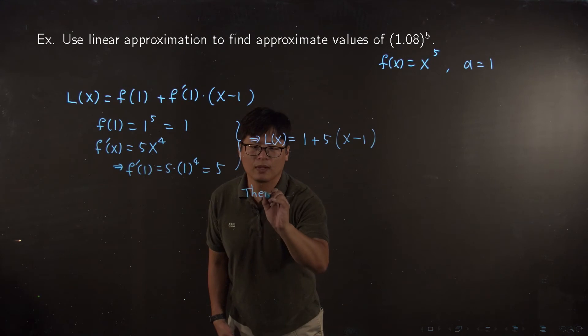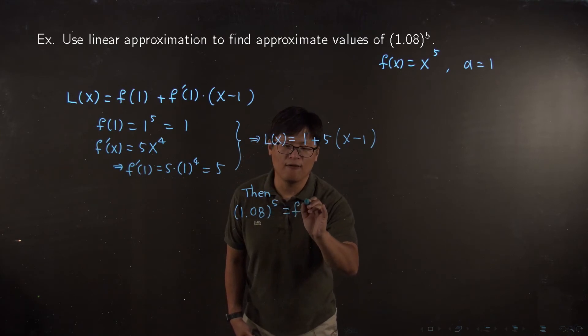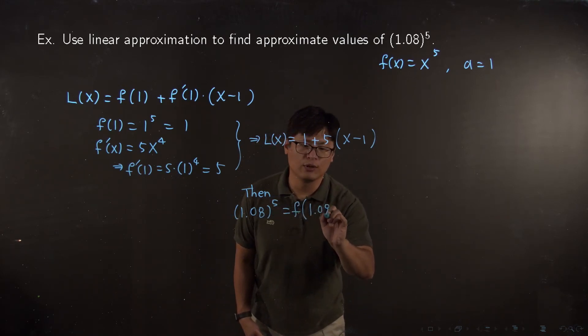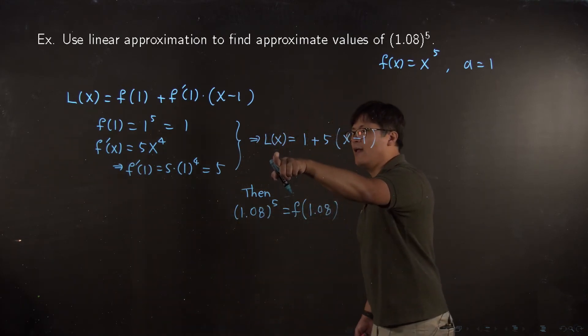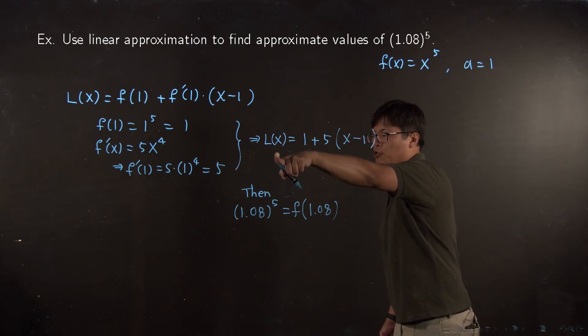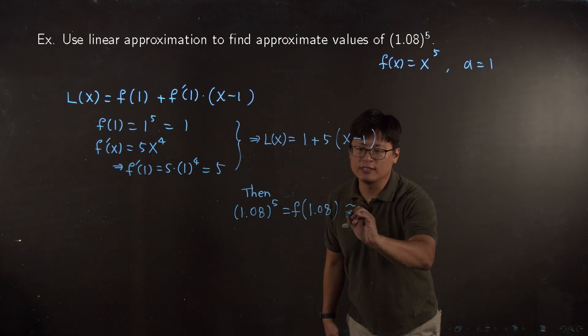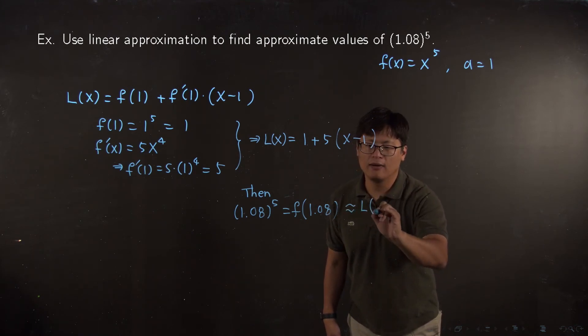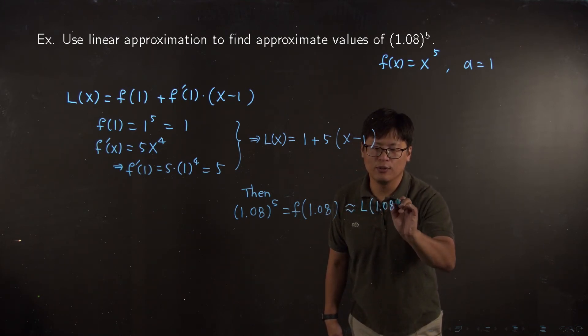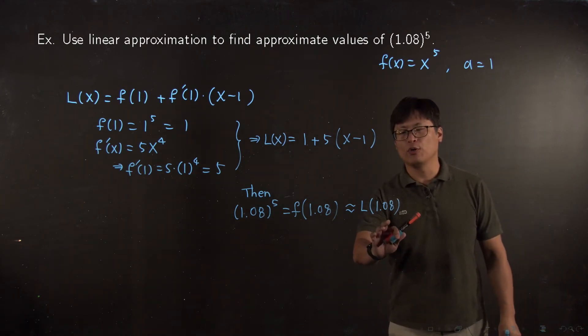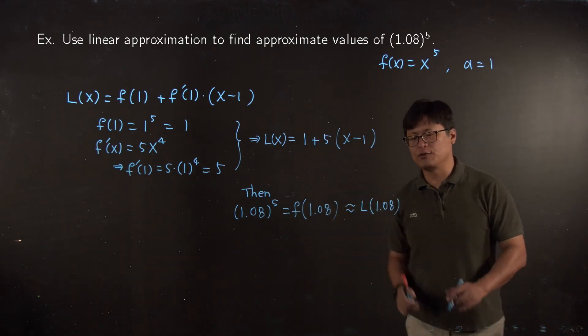Now let me try to approximate 1.08 to the fifth. 1.08 to the fifth is exactly equal to f(1.08). This L(x) is the linear approximation for the function f near 1, so now it's an approximation L(1.08). We're going to plug in 1.08 into my linear approximation.